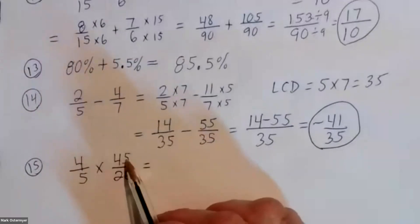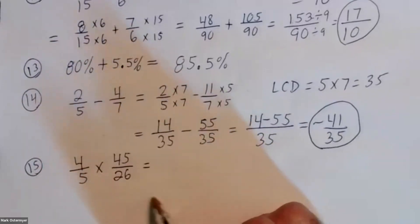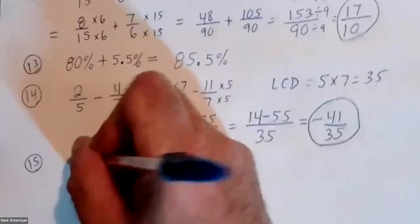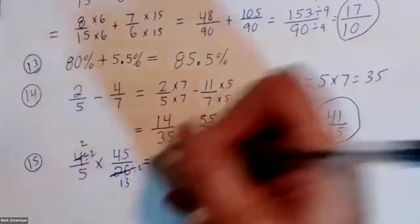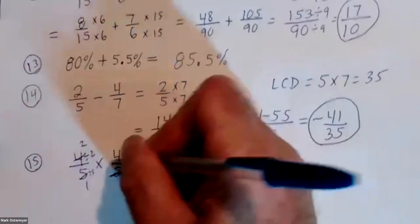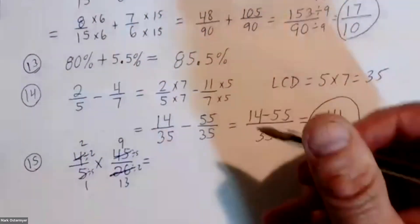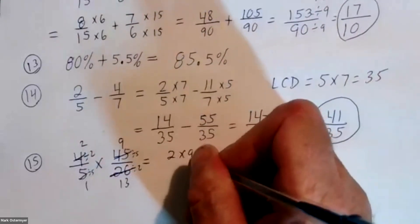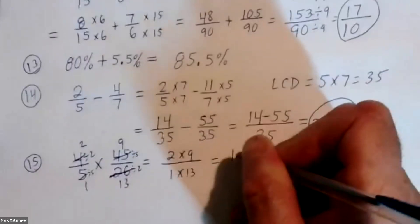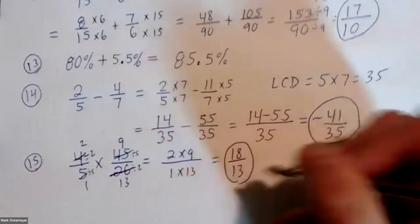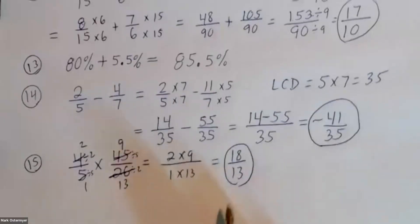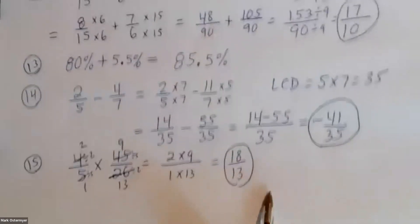This one is like cross-multiplying. Number fifteen: you can multiply four times forty-five over five times twenty-six, but the numbers get big, or you can cross-cancel first. Two divides into four twice, two divides into twenty-six thirteen times, five divides into itself once, five divides into forty-five nine times. Two times nine over one times thirteen is eighteen over thirteen — and that looks like a repeat.